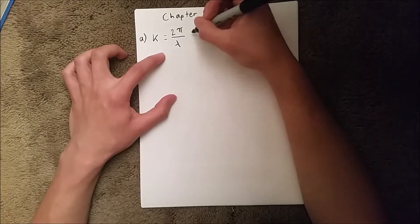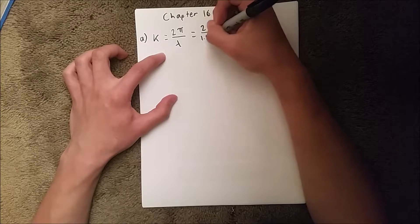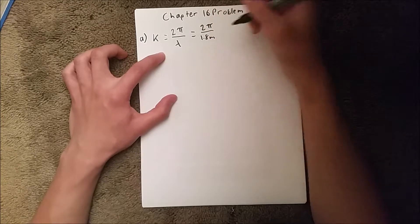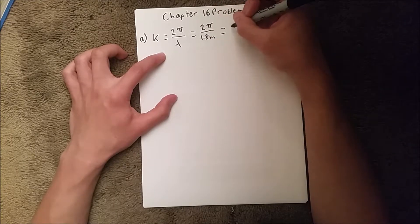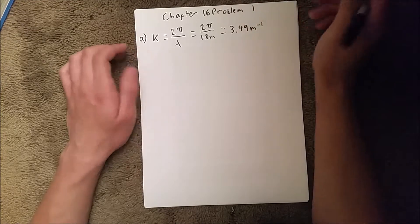And we are actually given the wavelength, so we can directly plug that in to 2π over 1.8 meters, and that should give you 3.49 meters to the negative one.